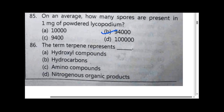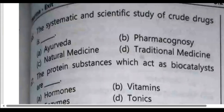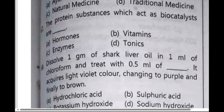The term terpene represents option B, hydrocarbon. The systematic and scientific study of crude drugs is known as option B, pharmacognosy.